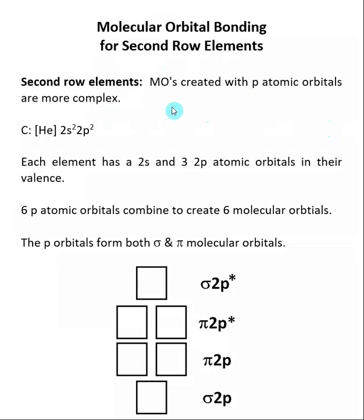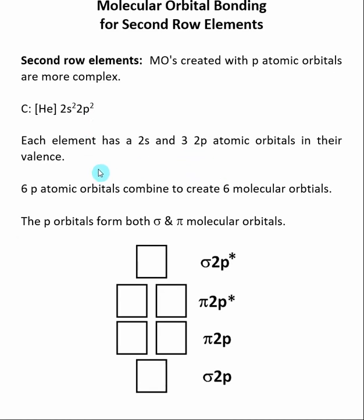These molecular orbitals will be more complex because P atomic orbitals will now be involved. When we look at a specific element, say carbon, we can see that its electron configuration contains a helium noble gas core plus a 2S subshell plus a 2P subshell. Inside that 2P subshell there are actually three atomic orbitals, representing m sub L values of −1, 0, and +1. Focusing on just the P orbitals, when two second row elements combine, we have six P atomic orbitals total. These will combine and create six molecular orbitals, forming both sigma and pi molecular orbitals.